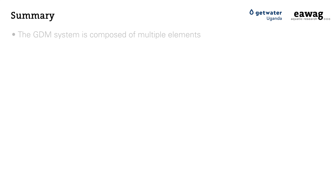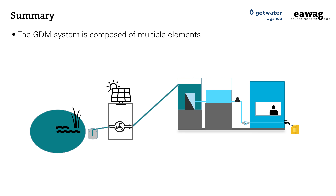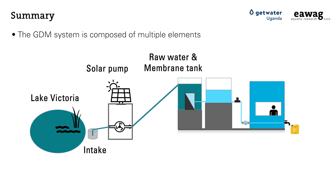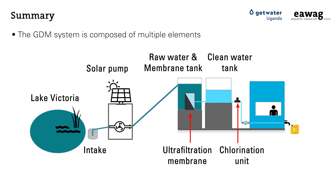This video has taught you how the GDM systems in our kiosks in eastern Uganda are composed. Water from Lake Victoria is pumped with solar power to the treatment site, where it is treated with a GDM filter and stored in the clean water storage tank. The ultrafiltration membranes of the GDM filter remove turbidity and pathogens. After the clean water storage tank, the water is chlorinated to protect it from recontamination. Customers can access the water 24 hours a day at the tap of the water kiosk via the water ATM.